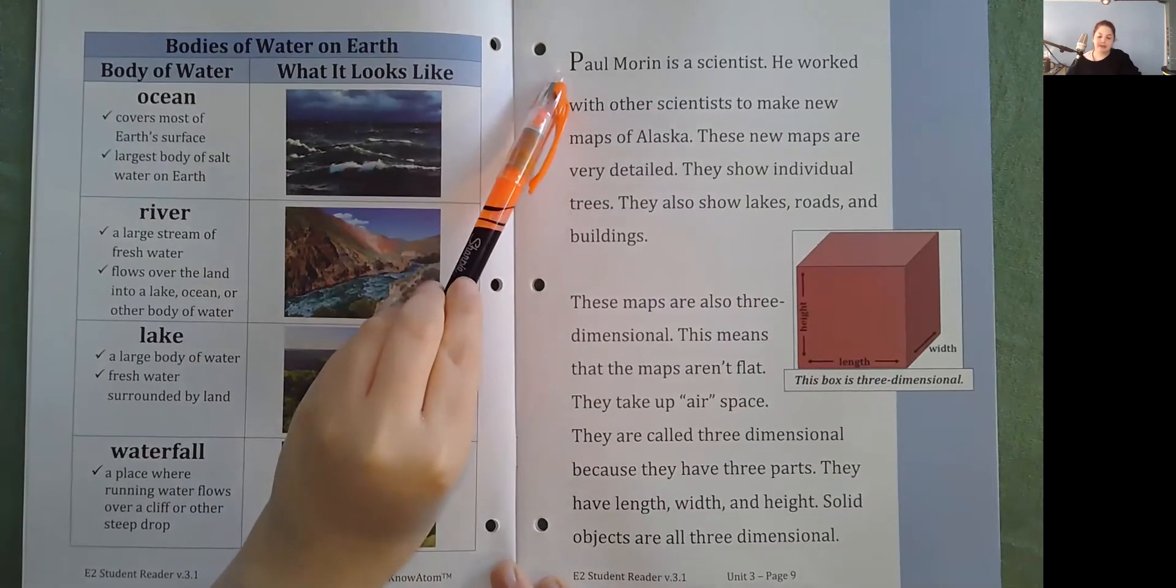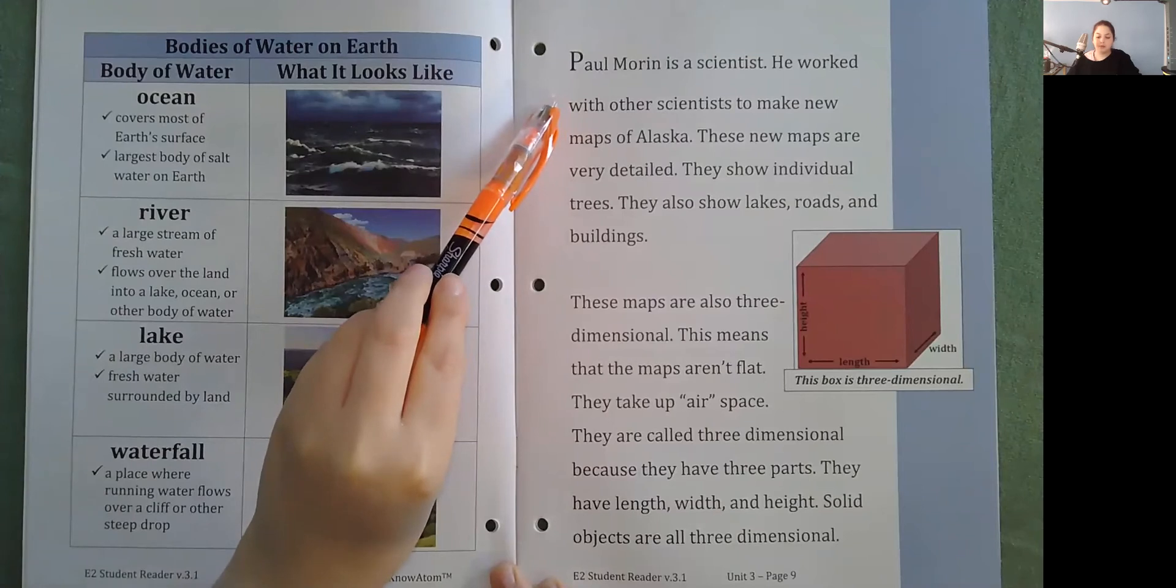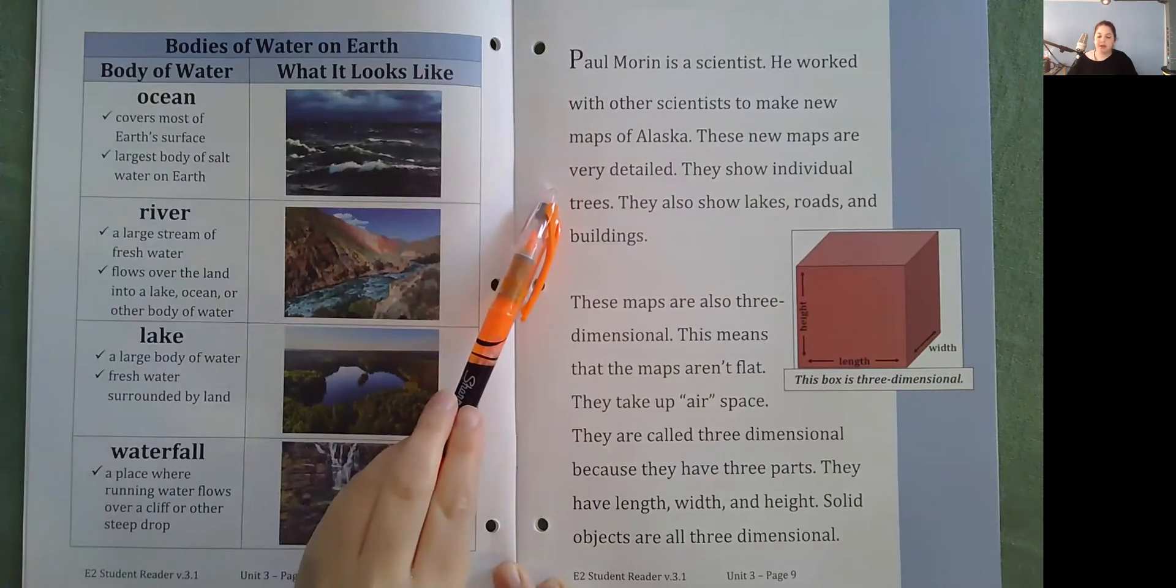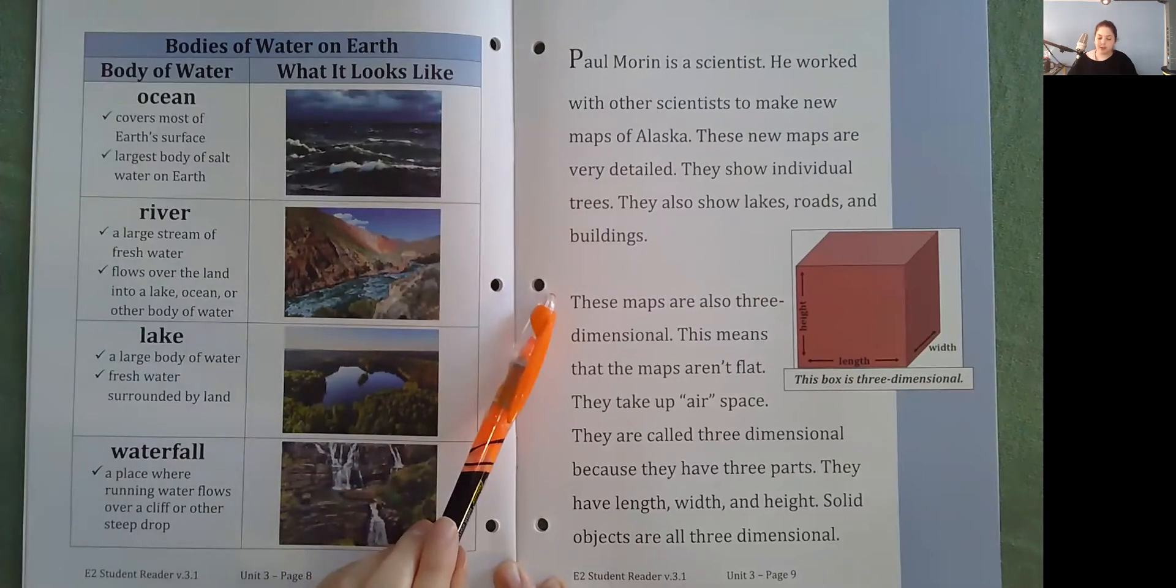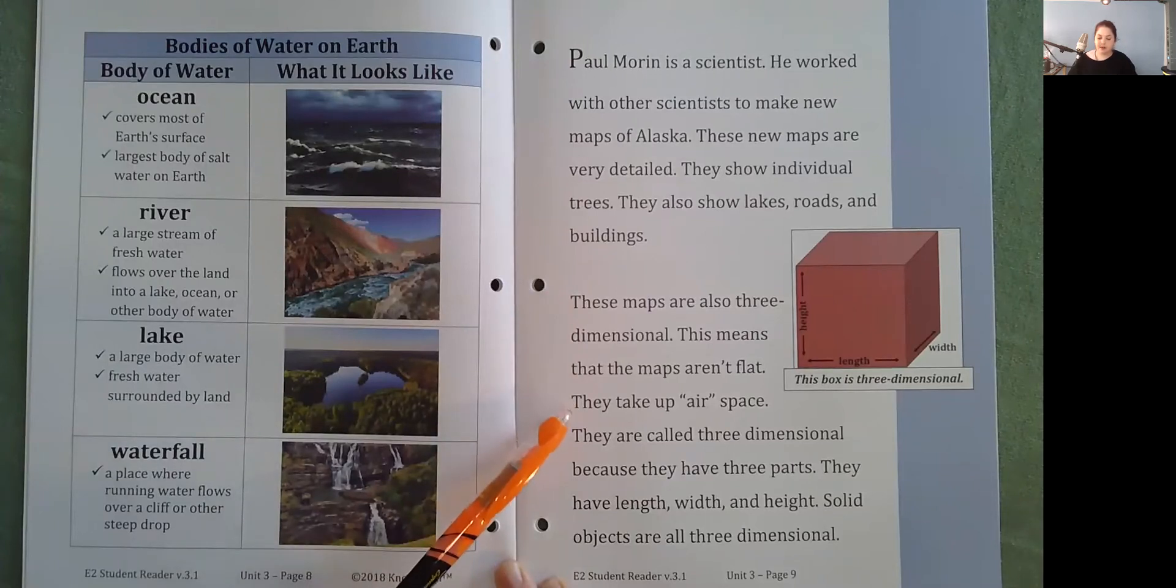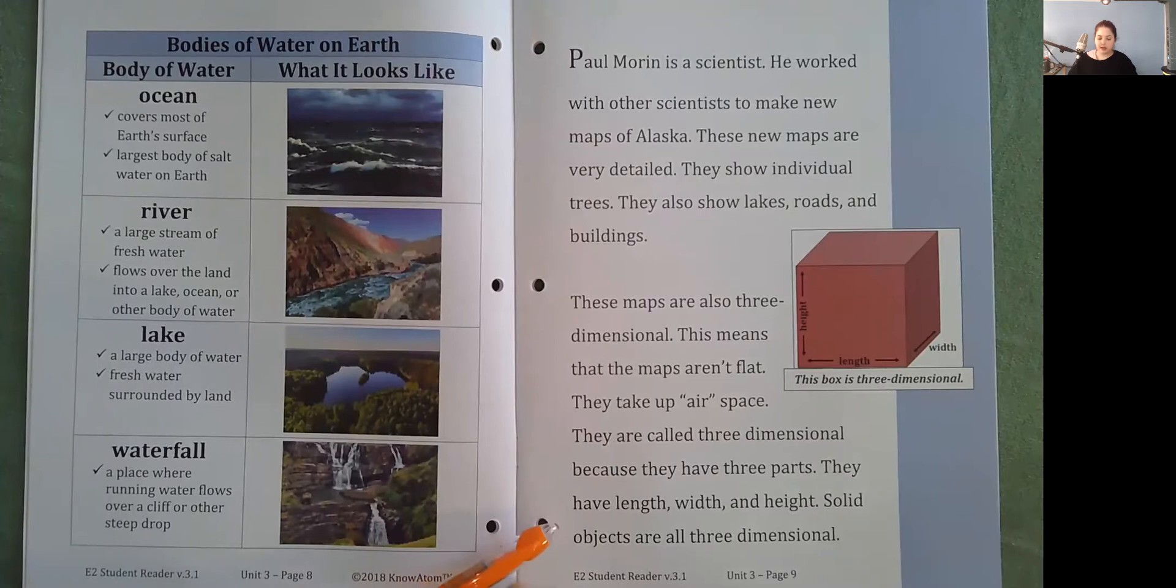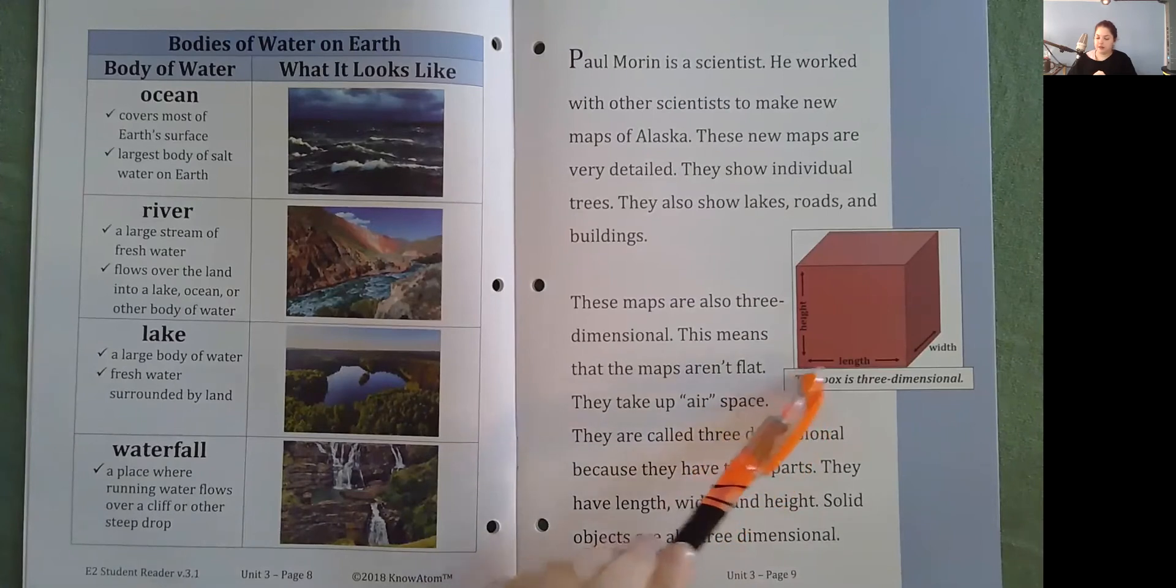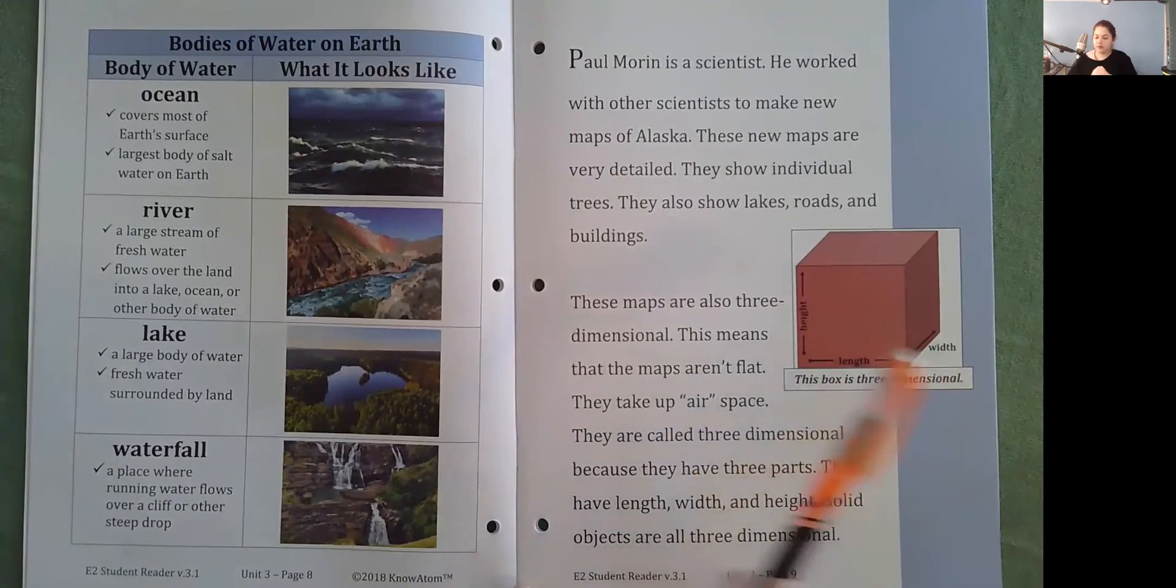Paul Morin is a scientist. He worked with other scientists to make new maps of Alaska. These new maps are very detailed. They show individual trees. They also show lakes, roads, and buildings. These maps are also three-dimensional. This means that the maps aren't flat. They take up air space. They are called three-dimensional because they have three parts. They have length, width, and height. Solid objects are all three-dimensional. So this box is three-dimensional because it has length, width, and height.